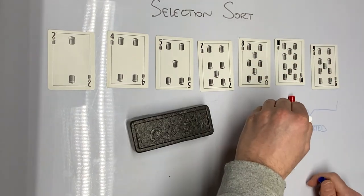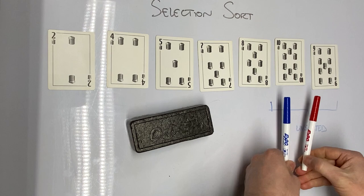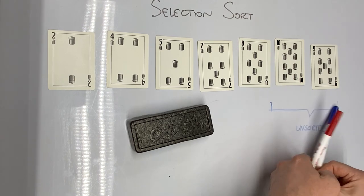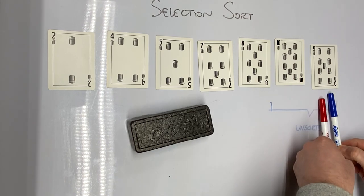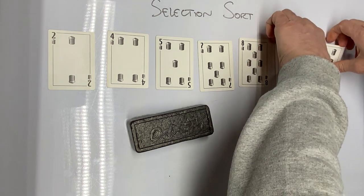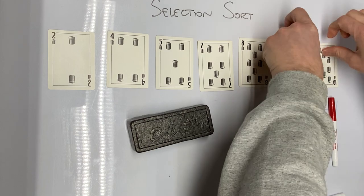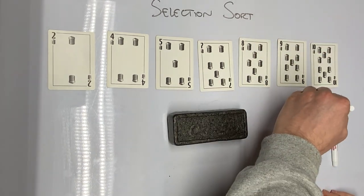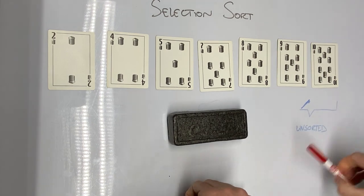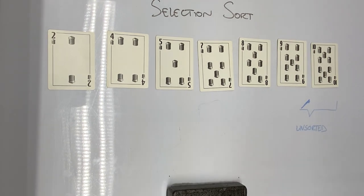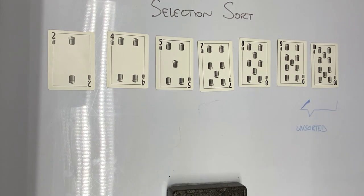We are now down to two cards. Ten is the smallest card, but nine is smaller than ten, so nine is the smaller card in the unsorted region. We swap it with the card at the beginning of the unsorted region. The unsorted region is now a single card, which means that card must be in the correct place and we are done. The cards are now sorted — that's the selection sort algorithm.